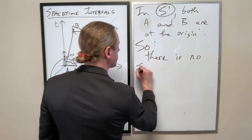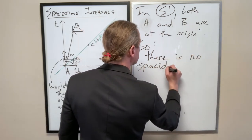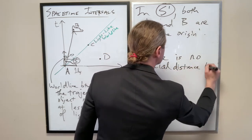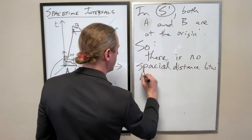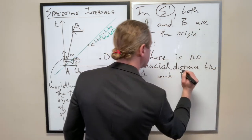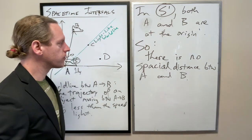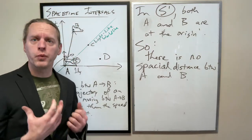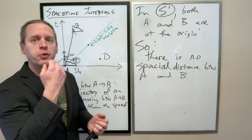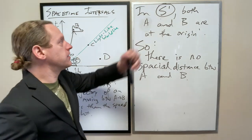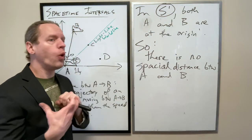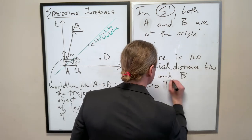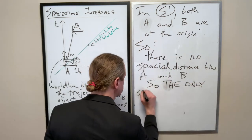There is no spatial distance between A and B. And therefore, the only thing that we could say is that the only separation between events A and B, at least in this frame here, the only separation between events A and B is in time. The only spacetime separation.